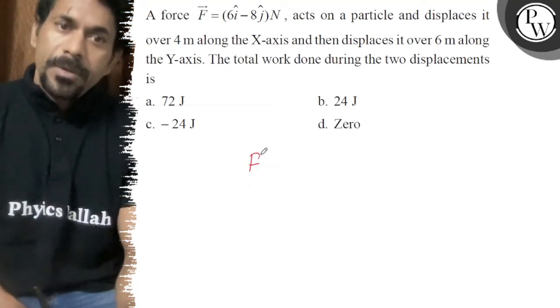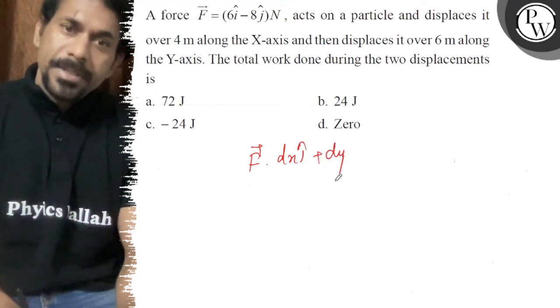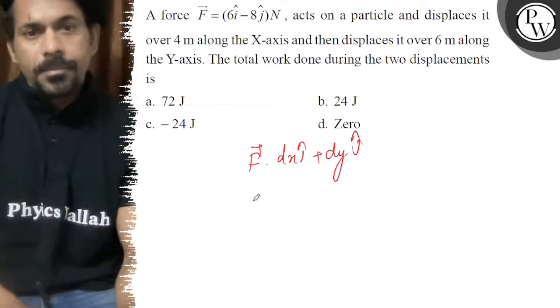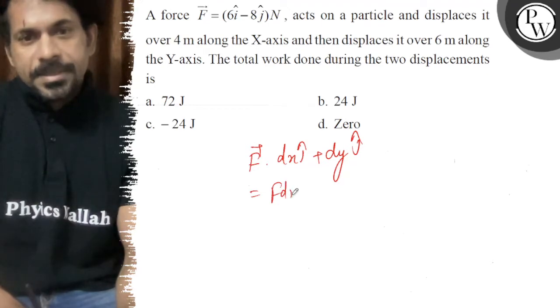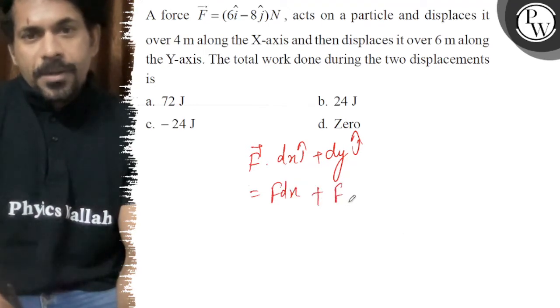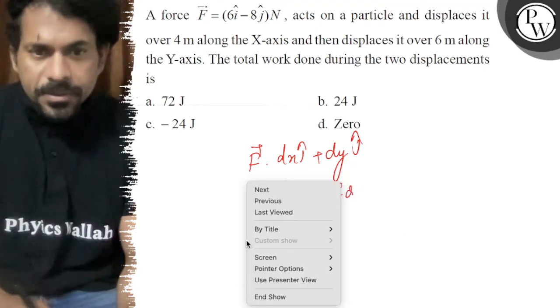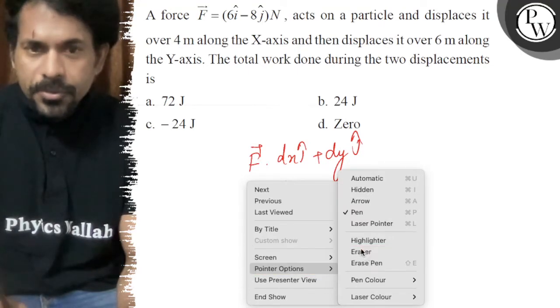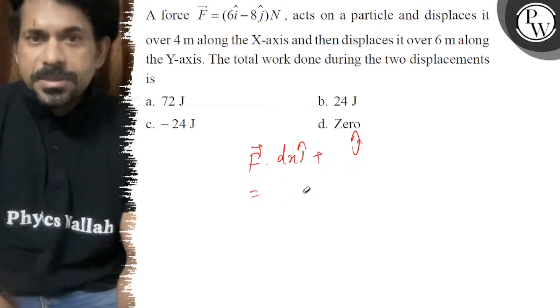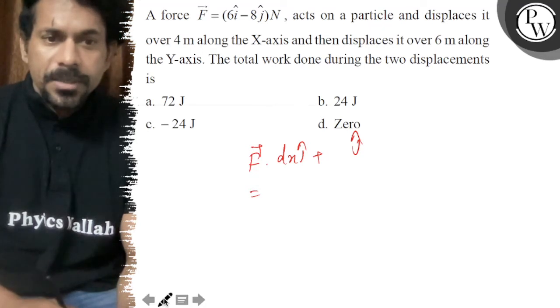So, simple ho jayega. F dot (dx î plus dy ĵ). Yeh ban gaya F dot dx plus F dot dy. Sorry, aapko dot product lena hai.